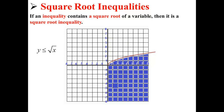Here, we shade this region because valid solutions are all y's less than or equal to that line. So, any point within this purple-blue shaded region is a valid solution to our square root inequality.